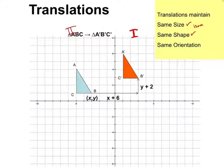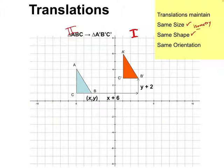An isometry is a transformation where the figure stays the same size and the same shape. This one also keeps the same orientation, but it doesn't have to do that to be an isometry.